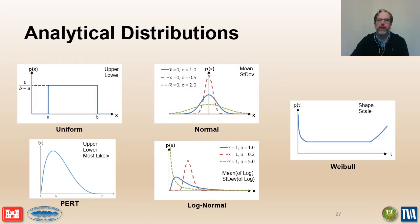The uniform distribution is a two-parameter bounded distribution where all values within a range have the same probability. It is commonly used to generate random numbers in a Monte Carlo analysis. The PERT distribution is a three-parameter bounded distribution where the most likely value is used to define the shape of the distribution, and it is commonly used to model the uncertainty in probability estimates that come from an expert elicitation.